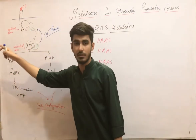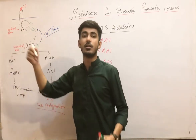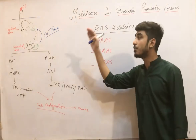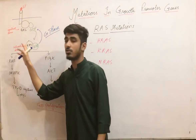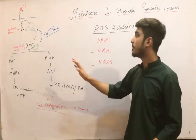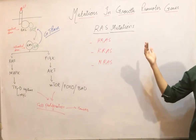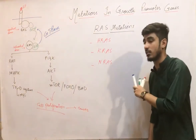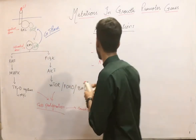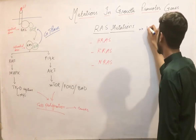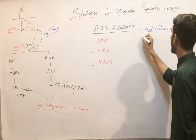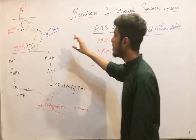When GTP is converted back to GDP, the RAS is inactivated. This GTPase activity is present to prevent over-proliferation or prolonged activation of the RAS genes — this is the normal negative regulatory pathway. Now, how does the RAS mutation occur? The GTPase activity is decreased.